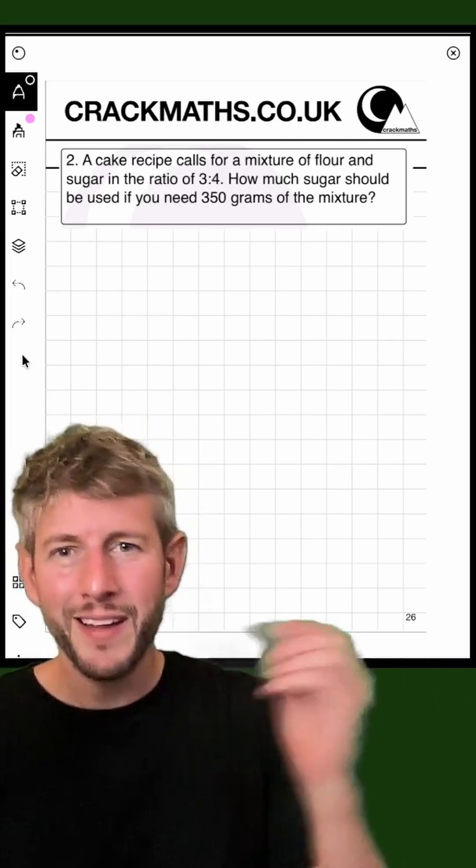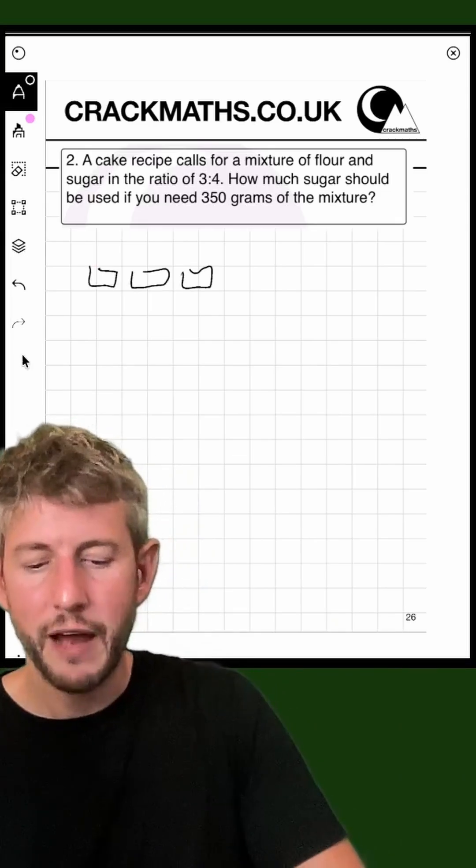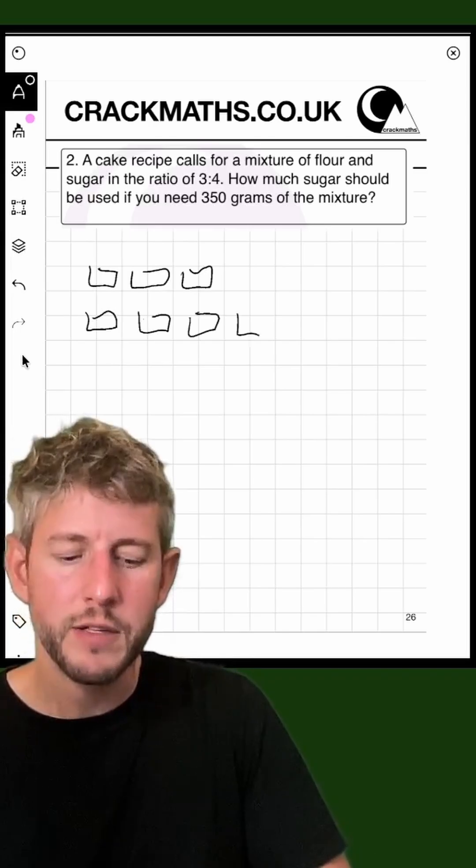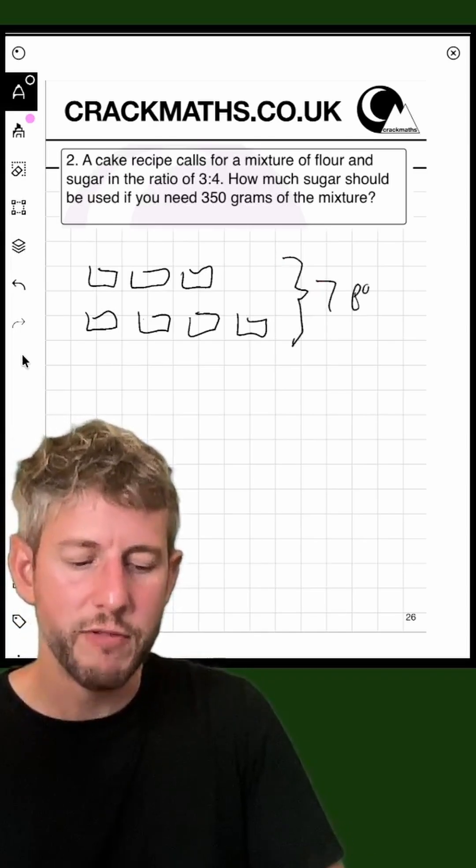Okay, so let's think about this. This cake recipe is being split up into three parts flour and four parts sugar. So all in all, that means we have seven parts to this ratio.